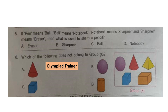Question 5: If pen means ball, ball means notebook, notebook means sharpener, and sharpener means eraser, then what is used to sharpen a pencil? The correct answer is option D. Here notebook means sharpener, and a sharpener is used to sharpen a pencil. So the answer will be option D: Notebook.